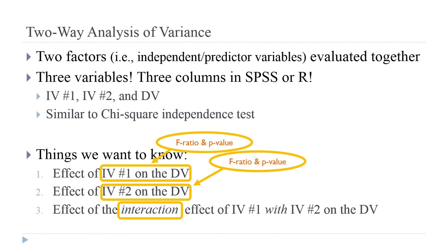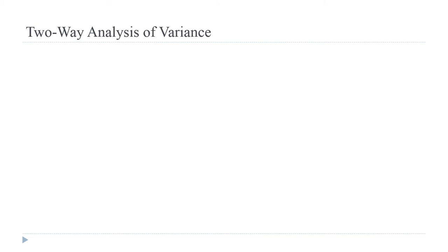The interaction effect is the extent to which the effect of independent variable 1 changes across the levels of independent variable 2 in how they affect the dependent variable. Or you can flip it around and it means the same thing — the extent to which the effect of independent variable 2 changes as you move across the different levels of independent variable 1. If that changes enough, you have a significant F-ratio.